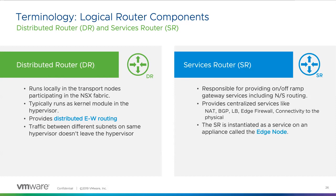Reading the slide: basic layer three routing between VMs on different IP spaces can happen in the distributed router, meaning if those VMs are on the same host, they don't need to leave the host to go to some layer three device to talk to each other — unless the traffic needs to traverse enhanced services like NAT, load balancing, or whatever the case may be. Then they would need to go through that edge node, regardless of where that is, and may need to leave the host. The services component is responsible for providing that on-off gateway functionality and other centralized services — it's part of the edge nodes.